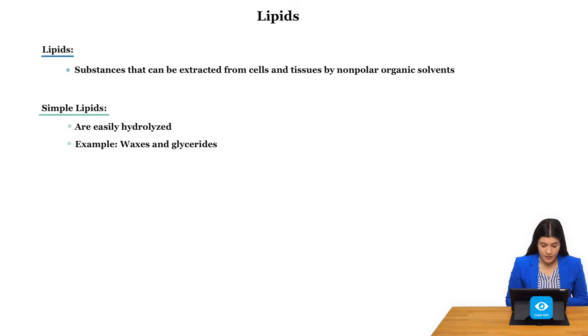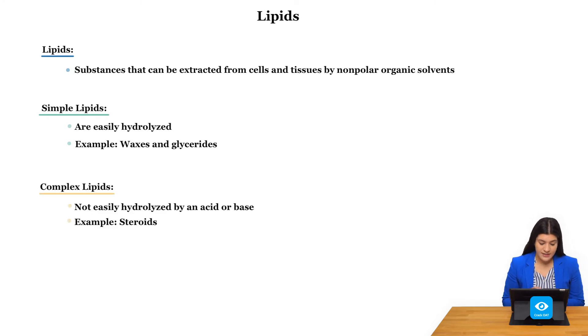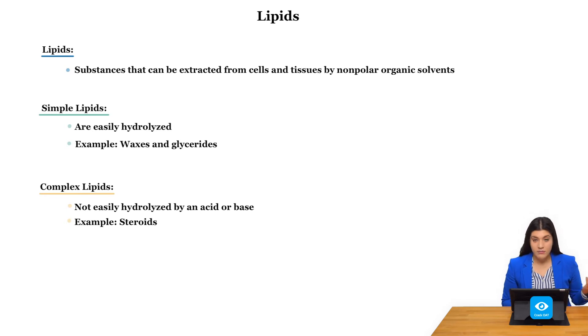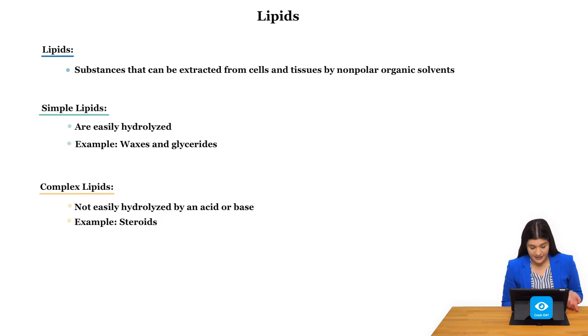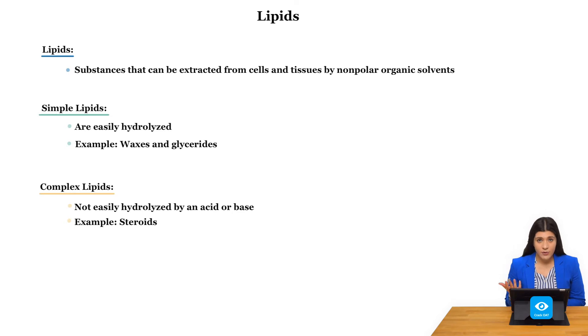Another type of lipid is a complex lipid. These are not easily hydrolyzed by an acid or a base. An example of this is a steroid.